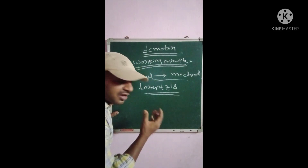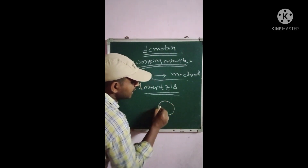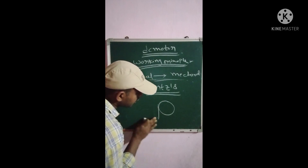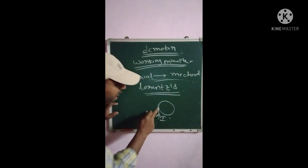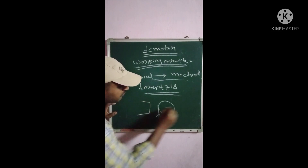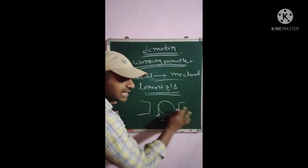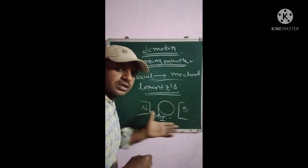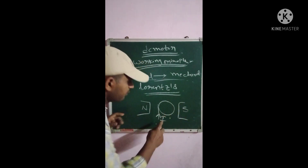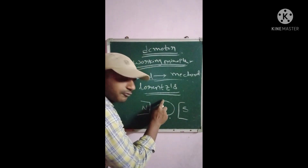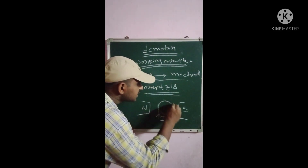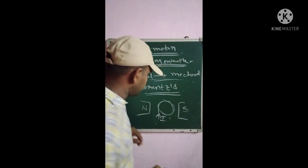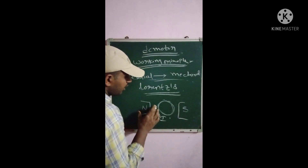Let us consider a conductor — here taken as the rotor. The rotor is carrying current I. When this current-carrying conductor is placed in a magnetic field — with one north pole and one south pole — then a force exists and is experienced in that conductor. This is Lorentz's law.